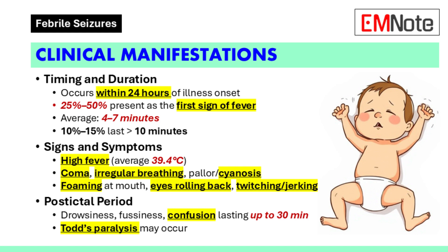Signs include pallor or cyanosis, foaming at the mouth, eyes rolling back or fixed gaze, generalized or focal twitching, and jerking of the extremities. A postictal period of drowsiness, fussiness, or confusion may last up to 30 minutes. Postictal palsy, also known as Todd's paralysis, may also occur.